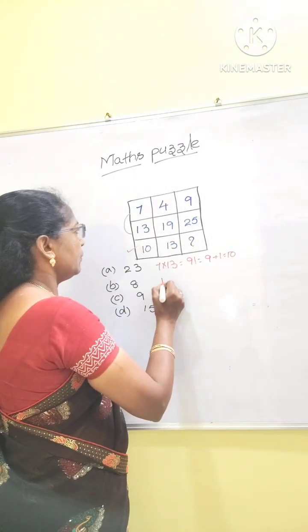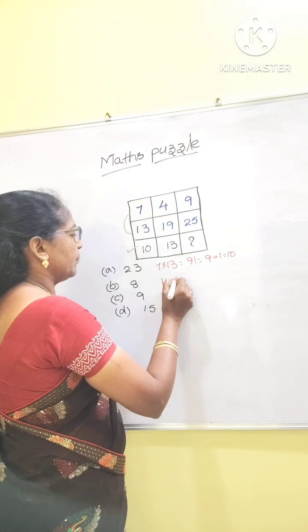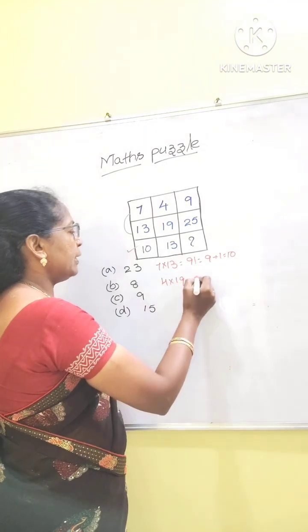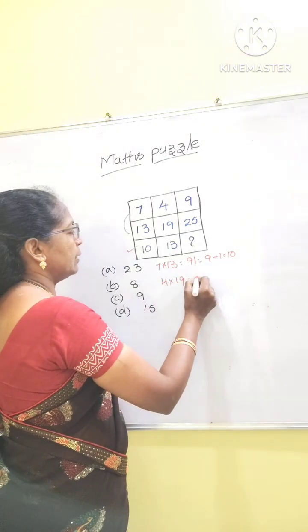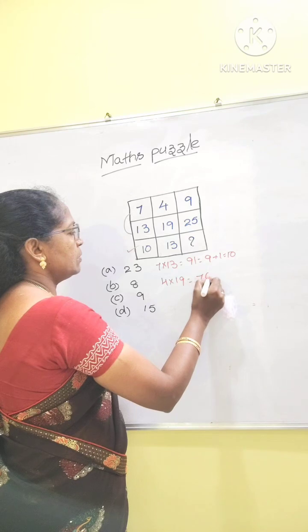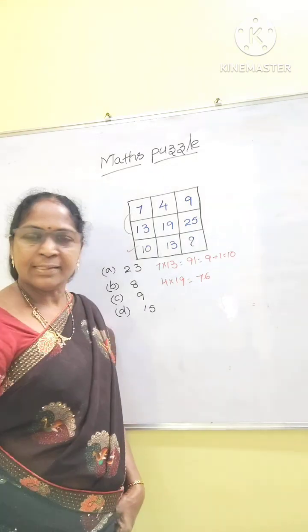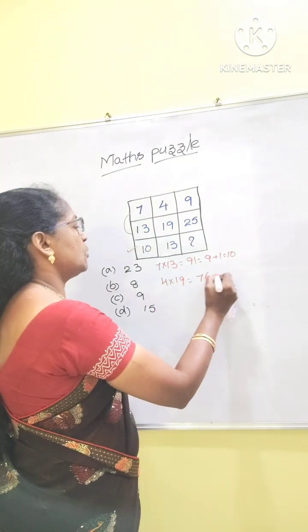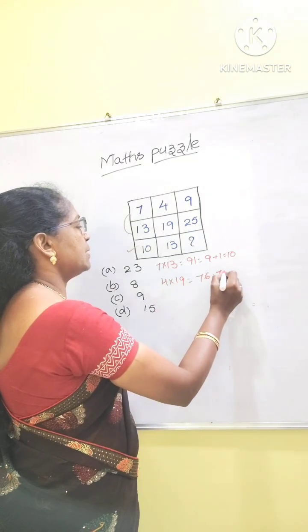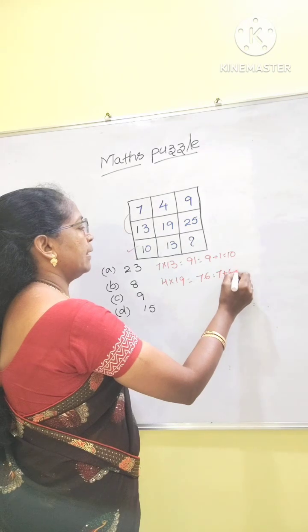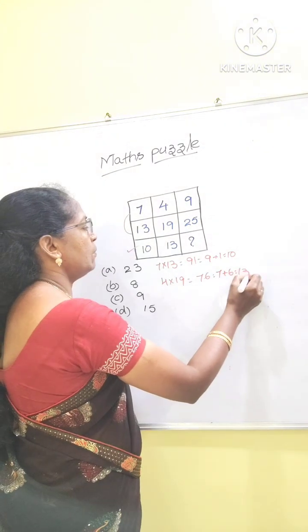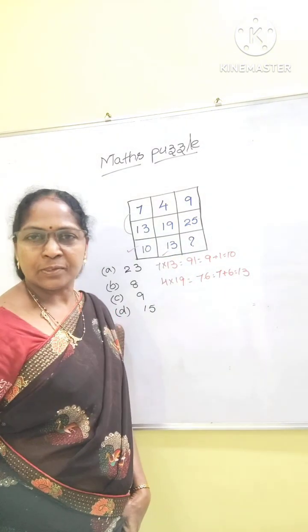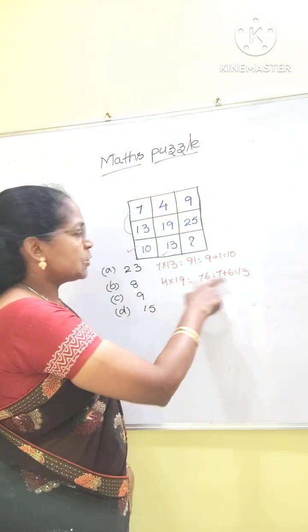And 4 into 19, that equals 76. That is 6. So 7 plus 6 equal to 13. Those two digits you should add.